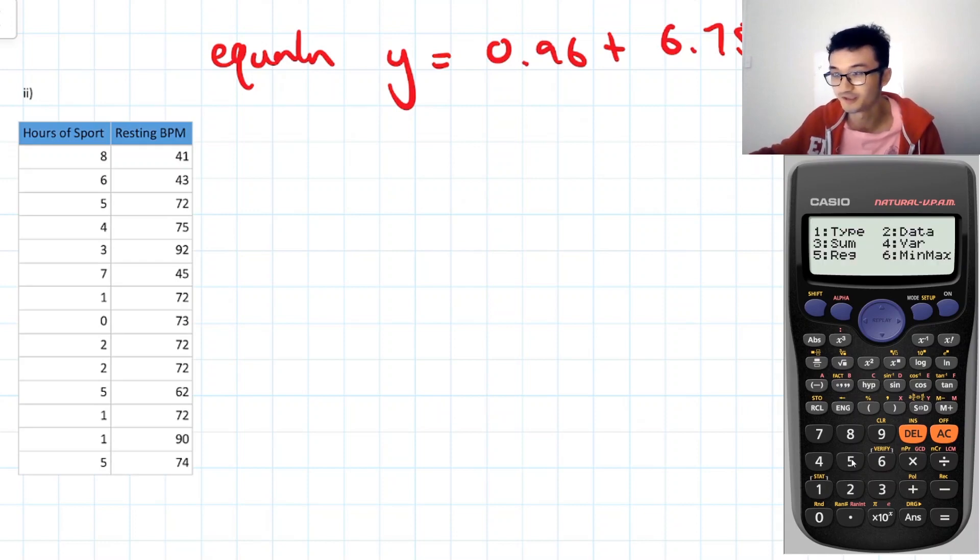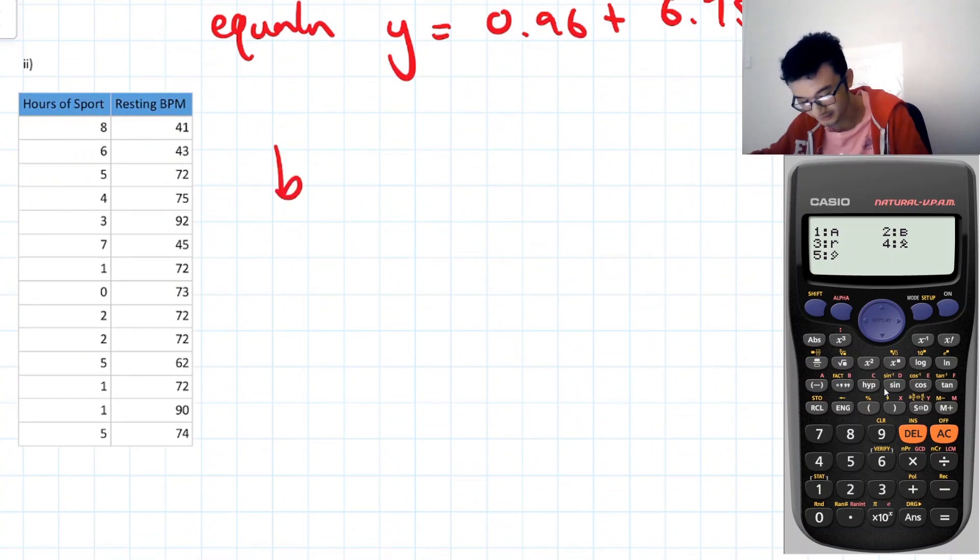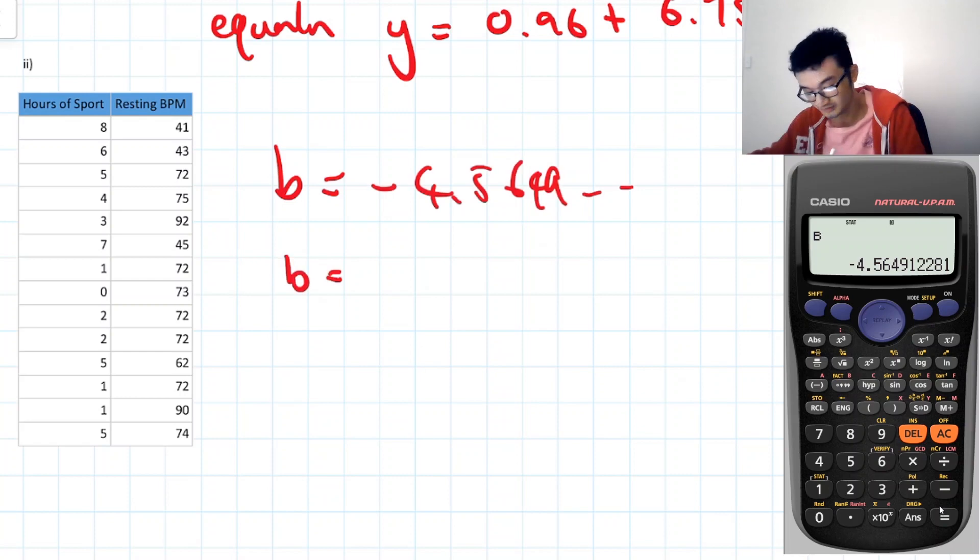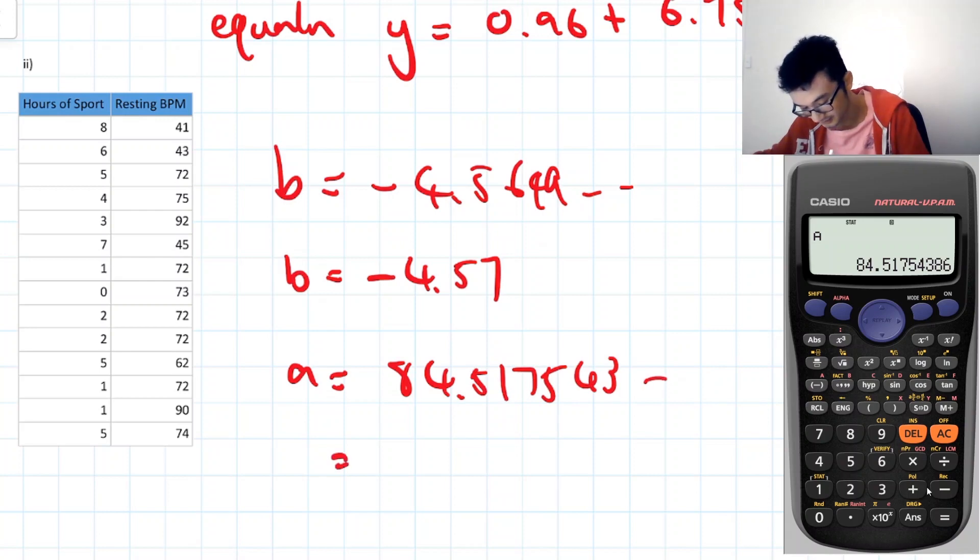So let's go shift 1, 5 for the regression analysis, and I'm going to calculate my B value. I typically have to round these off because they're going to be decimal values. So let's go ahead and calculate B. That's going to be equal to negative 5, 5, 5, 7. And A, let's go ahead and calculate that as well. All right. So A is going to be 84.517543. That's 84.52.